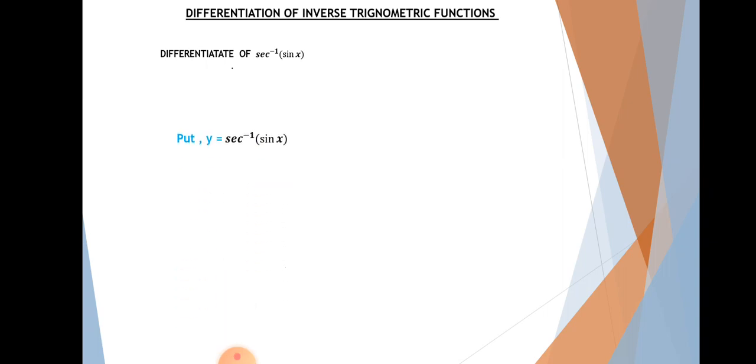We're discussing inverse trigonometric functions. Our function is y = sec inverse of sin x. We need to differentiate with respect to x. Differentiate both sides with respect to x. Now we know that the formula for sec inverse is available.